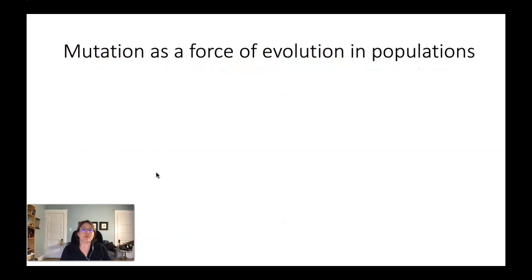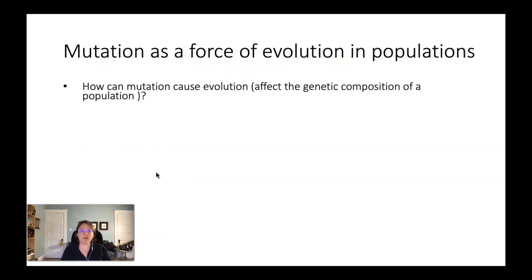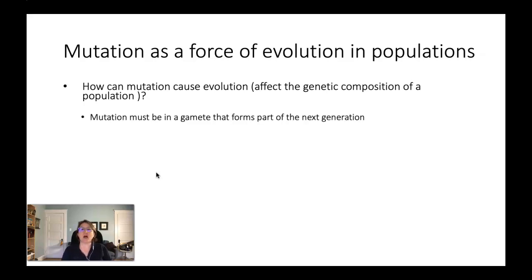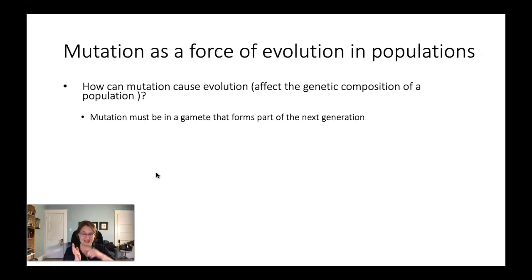Mutation is a force of evolution in populations, however it's not a very powerful one. It can affect the genetic composition of a population, but only if that mutation occurs in a sex cell — either an egg or a sperm — and then that sex cell has to make it into the next generation, as part of a fertilized egg that grows into an organism.